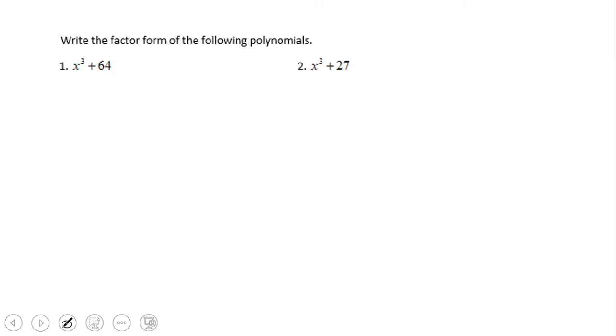Now let's move to sum of cubes. Sum of cubes is similar: we have a³ + b³ equals (a + b), and then we square the first term a², switch the sign - it was addition now it's subtraction - multiply the two terms a and b, and square the last one.